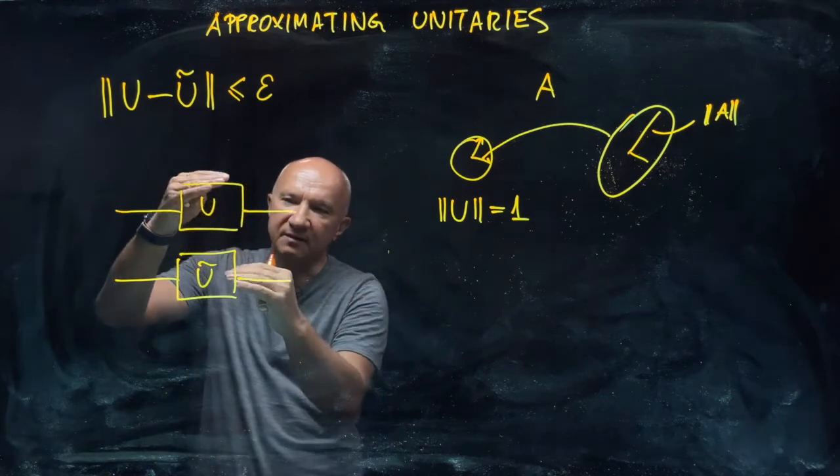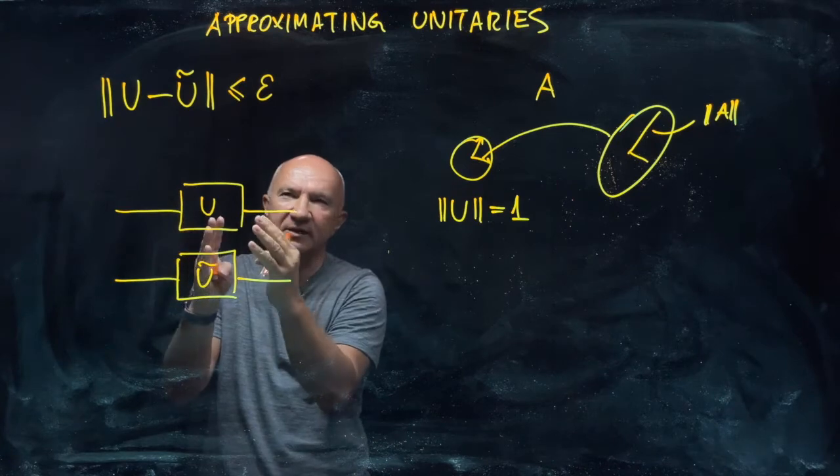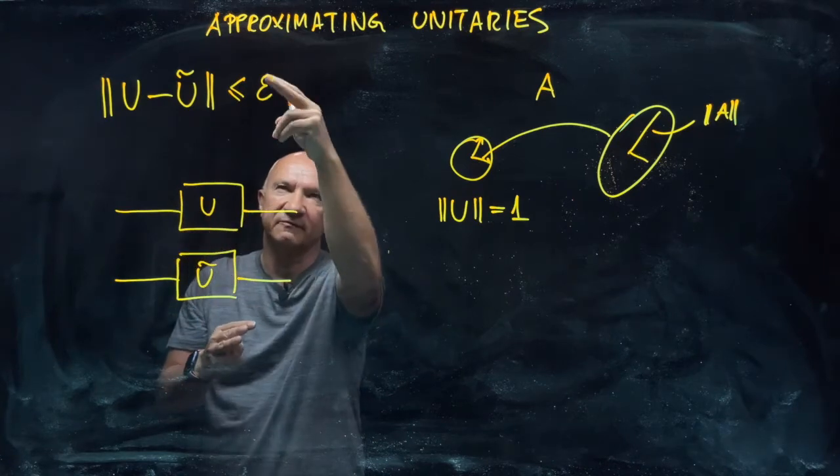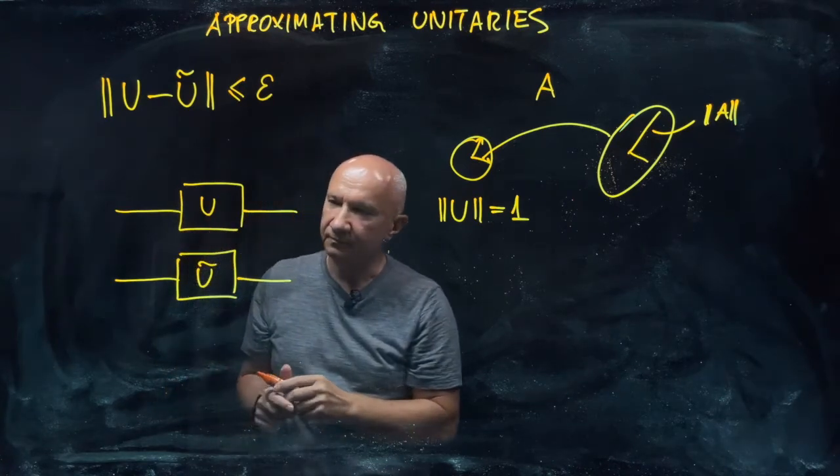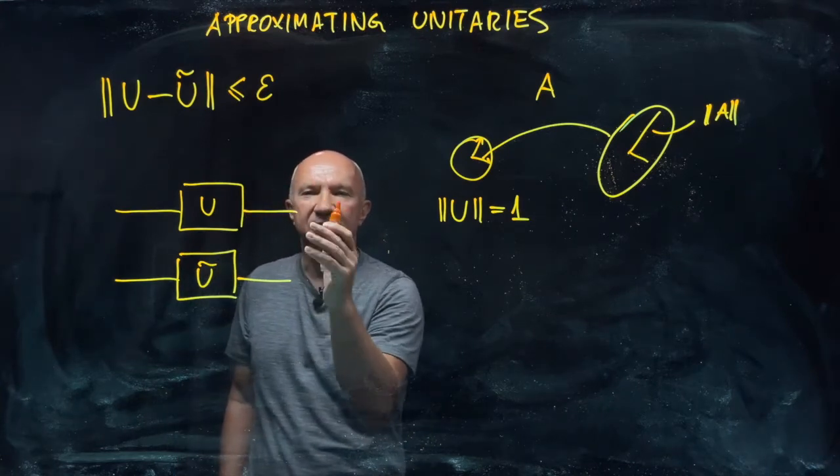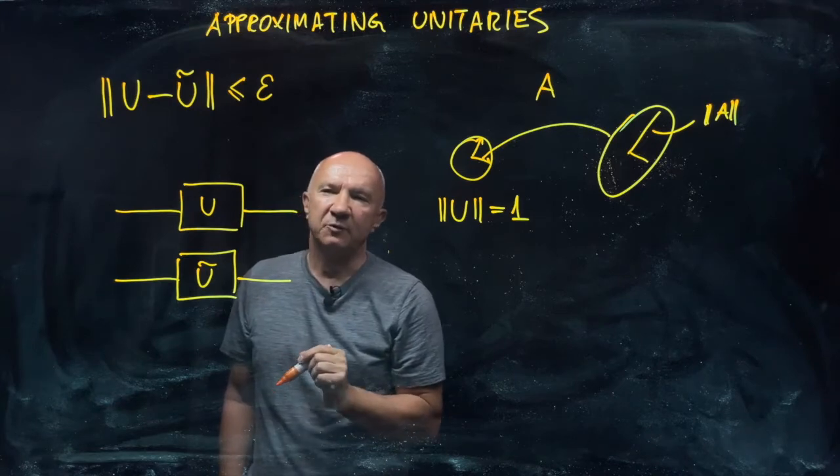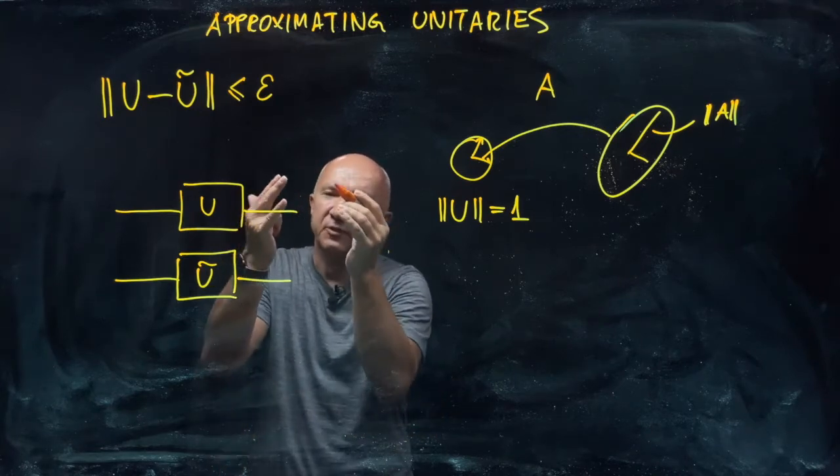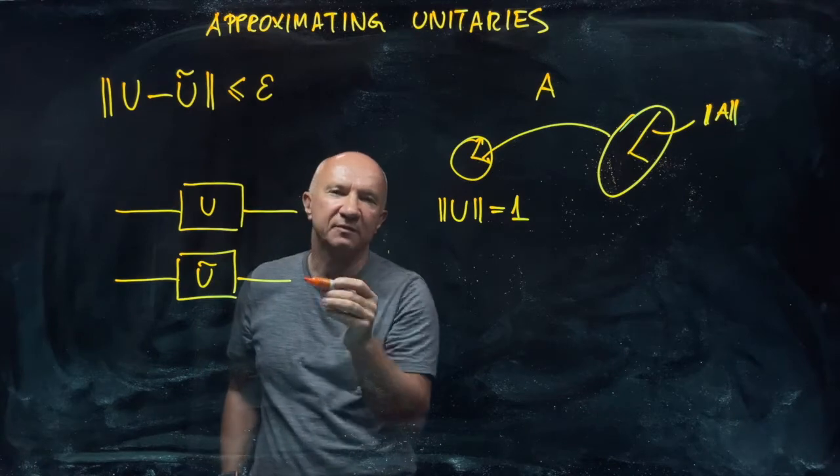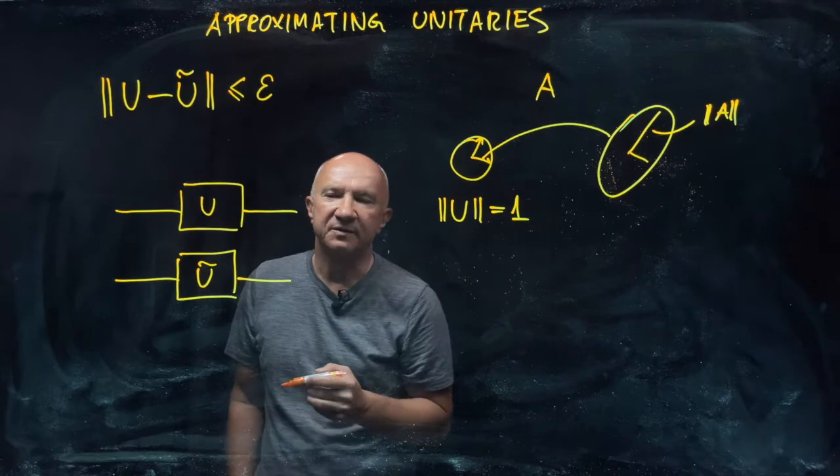And when the two operators are close to each other, so not further apart than epsilon, then if you perform any measurement at the output here, then the probability—say you measure whatever. It could be that it's a qubit and you measure whether it's in a zero or the one state.